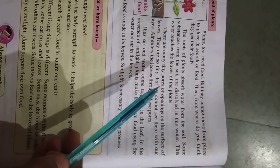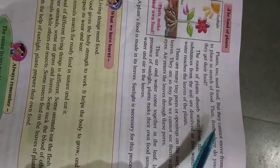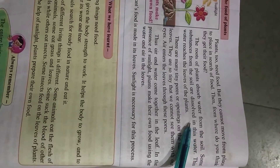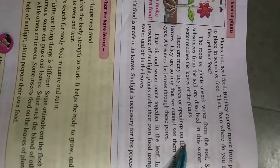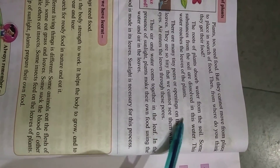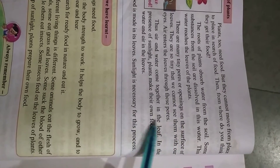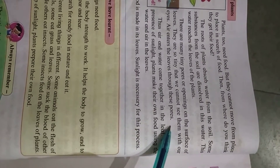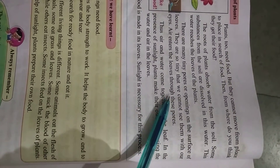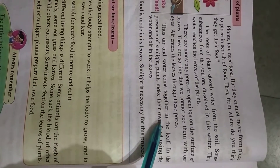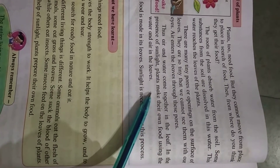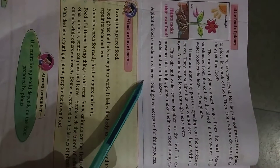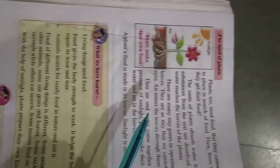Now let's look at the food of plants. Plants do need food, but they cannot move from place to place in search of food. The roots of plants absorb water from the soil; some substances from the soil are dissolved in this water, and this water reaches the leaves. There are many tiny pores or openings on the surface of leaves, and air enters the leaves through these pores. In the presence of sunlight, plants make their own food using the water and air in the leaves. A plant's food is made in its leaves — sunlight is necessary for this process.